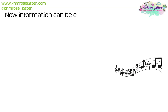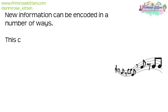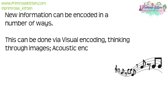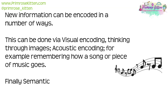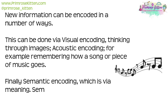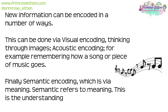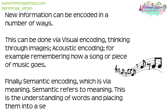New information can be encoded in a number of ways. This can be done via visual encoding — thinking through images. Acoustic encoding, for example, remembering how a song or a piece of music goes. And finally, semantic encoding, which is via meaning. The word semantic refers to meaning — this is the understanding of words and placing them in a sentence.